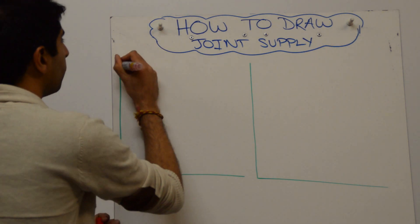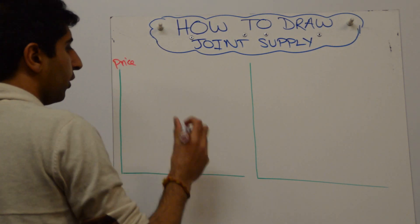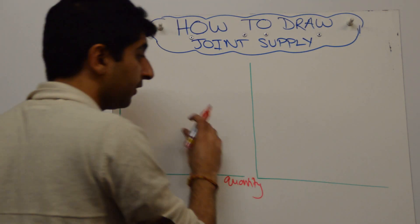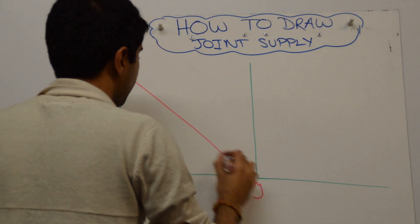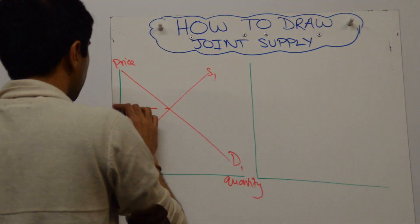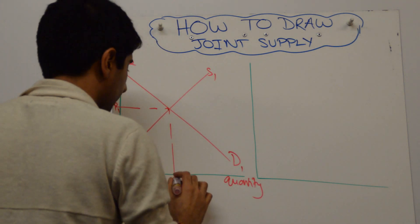So on diagrams what do we draw? Well let's on the left show price on the y-axis and quantity on the x-axis. So this could be the market for honey.